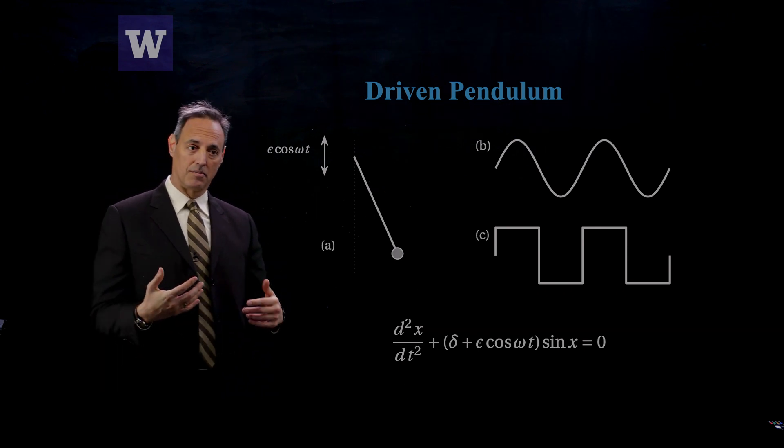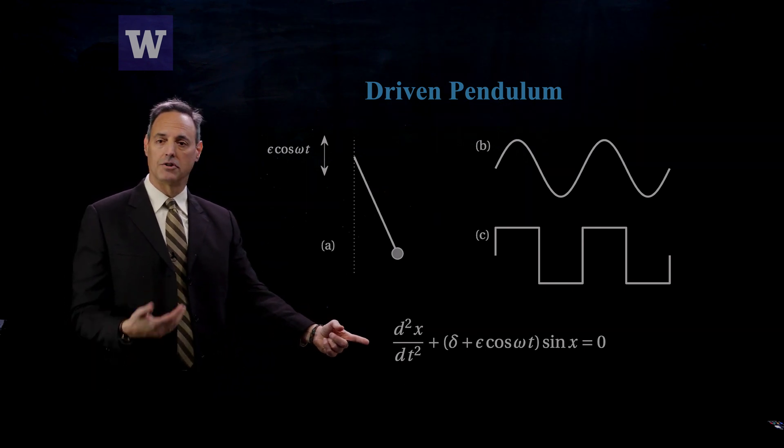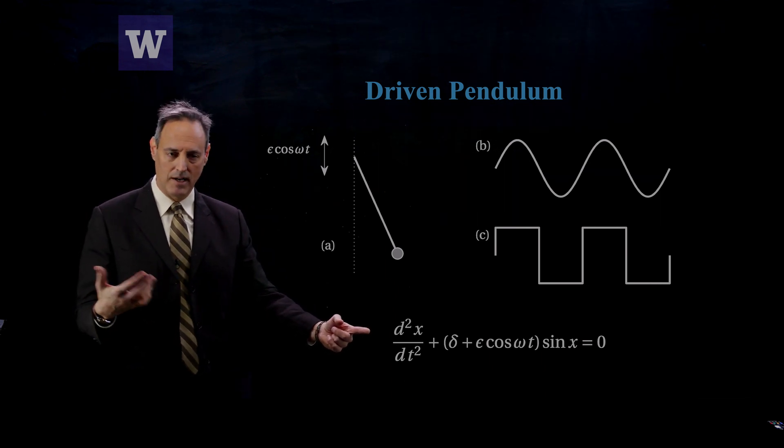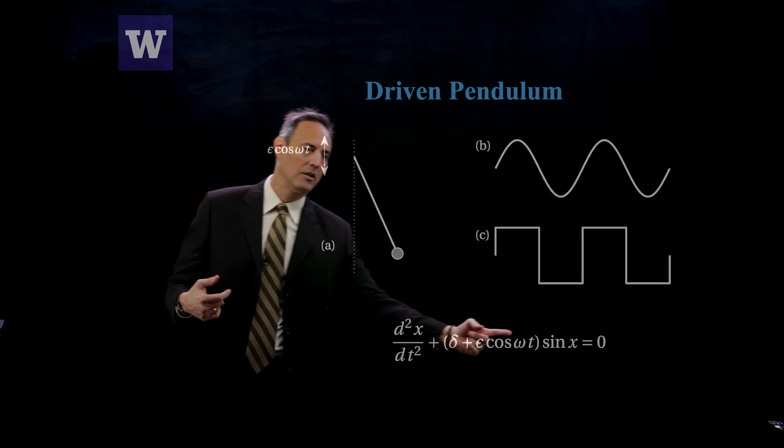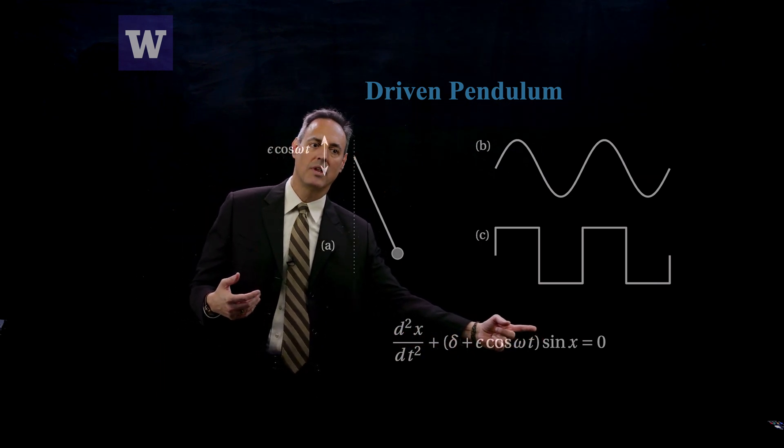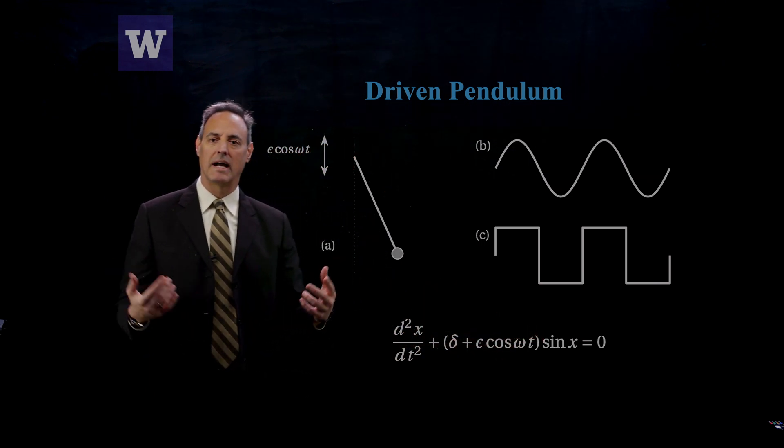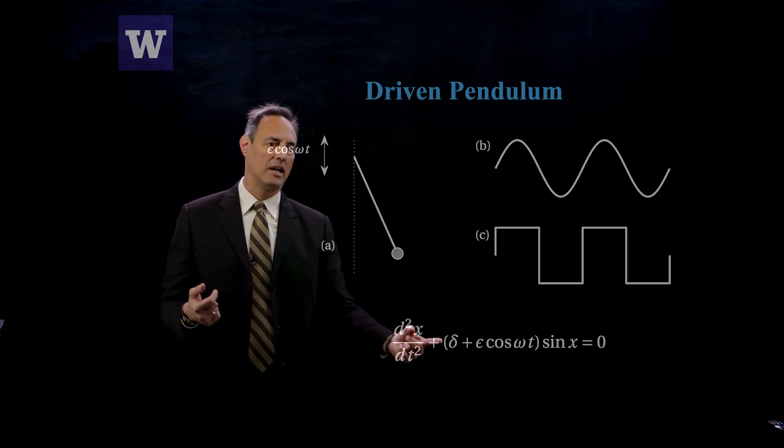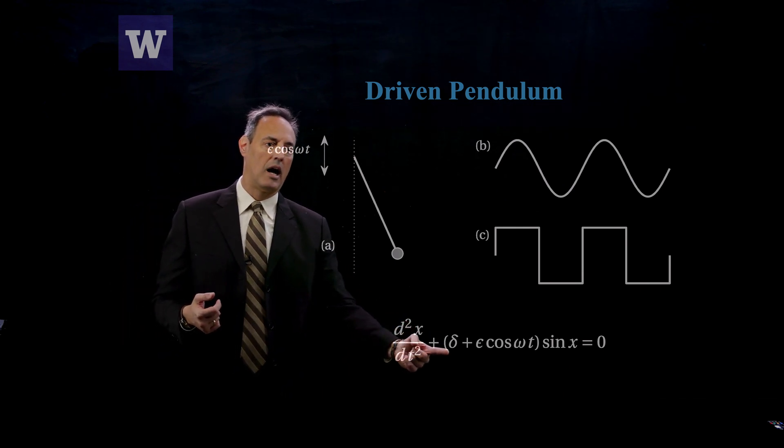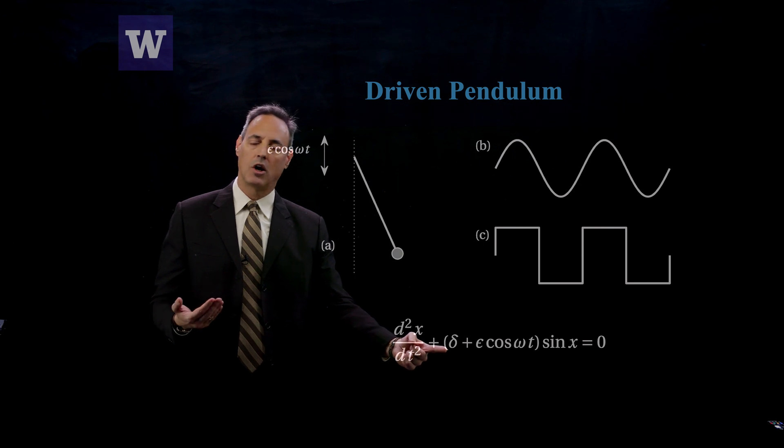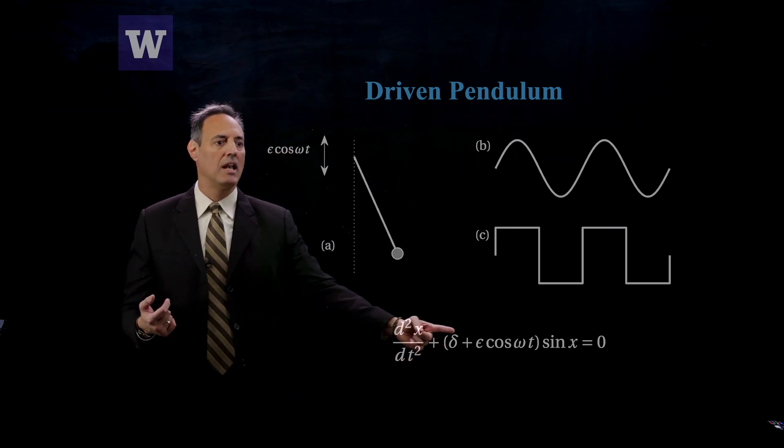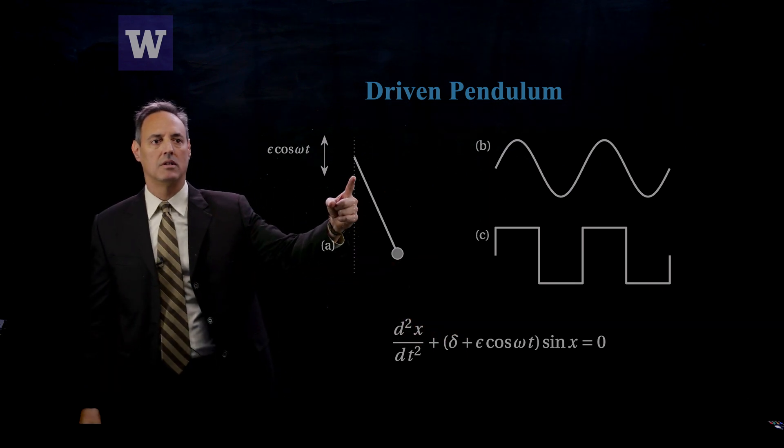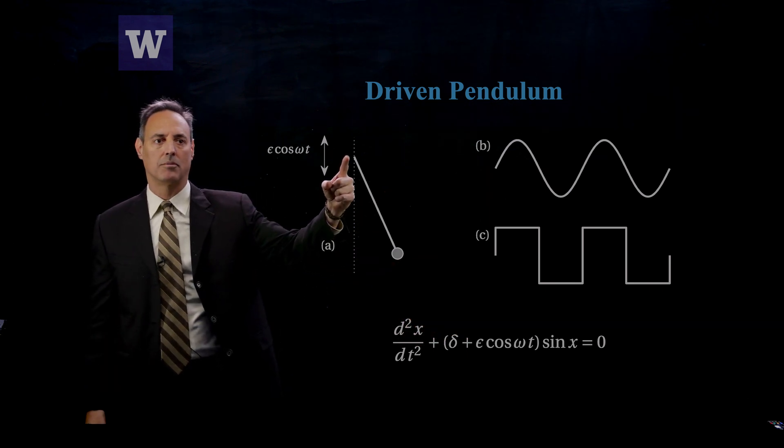Now, the governing equations at this point are given by here. This is fully nonlinear. It's a second derivative, f equals ma. So it's a second derivative. And here, the pendulum has sine x. Remember that's the nonlinear pendulum, x double prime plus sine x or minus sine x. Here I'm going to say that there's usually a constant in front of it, delta, but now I'm adding to that epsilon cosine omega t, which represents the forcing from this amplitude fluctuation here.